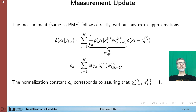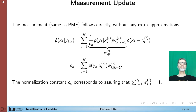The measurement update is also the same as in the point mass filter. We take the weight from the time update and multiply by the likelihood for this particular grid point x_k^i. We compute the normalization factor by summing up all these products, which means that the weights in the sum will sum up to one, giving us a proper density function after the measurement update.